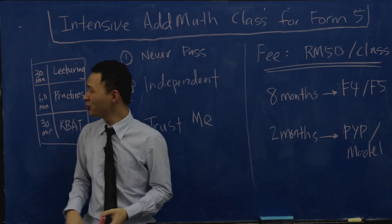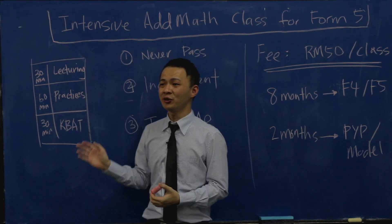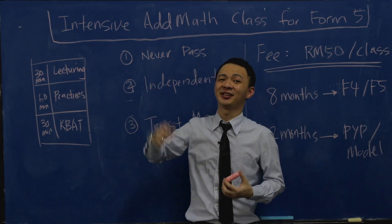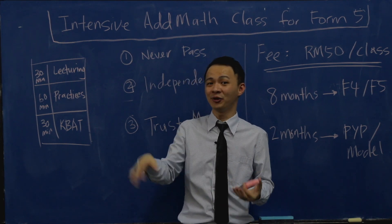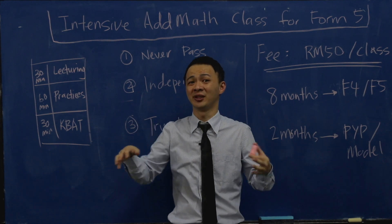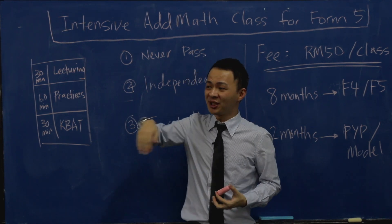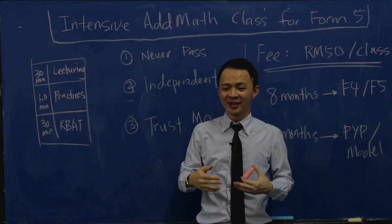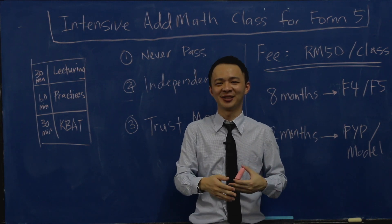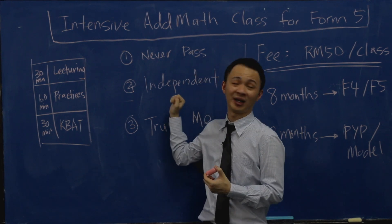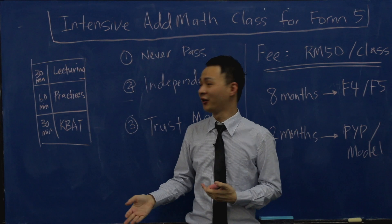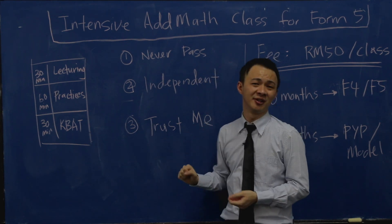The second criteria is that you must be an independent student, because in my class most of the time you will be doing practice. What I mean by independent is: when you face a question you can't do, raise your hand and I'll come guide you. But while I'm helping another student, I want you to skip the question you can't do and move on to the next one — not just sit there waiting for me or wasting time on your phone. The class has a maximum of 12 students.